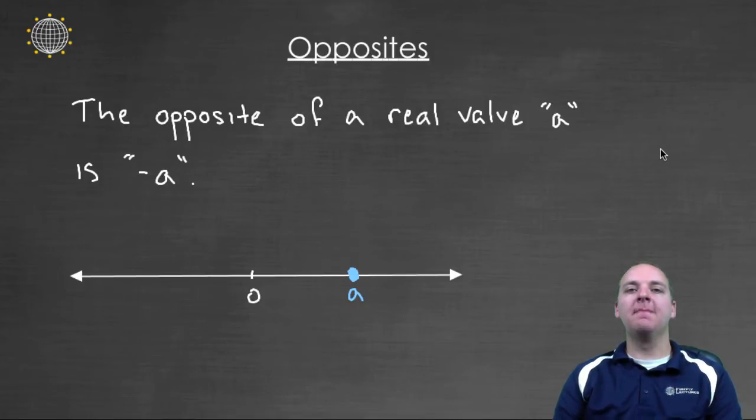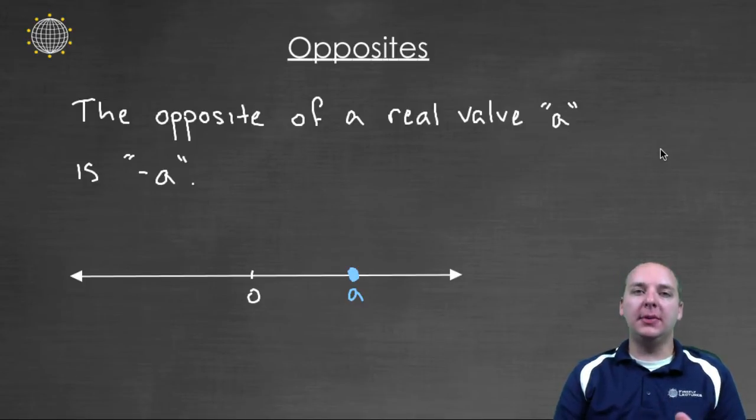The opposite of a real number is a number that is the same distance away from zero, but on the opposite side of zero on the number line.